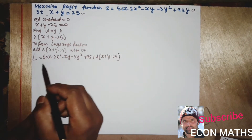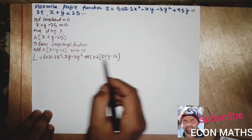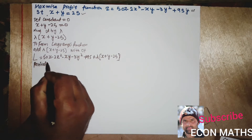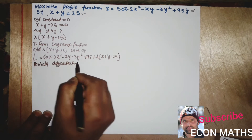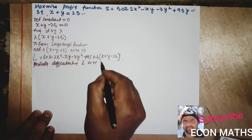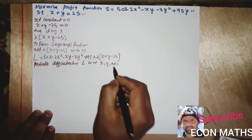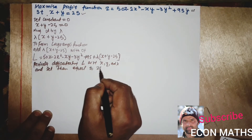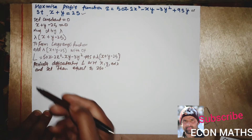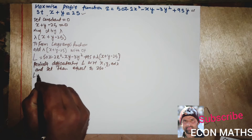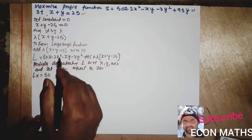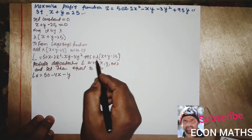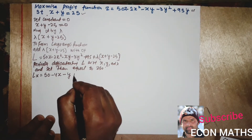To get the values of x, y, and lambda, we partially differentiate this Lagrangian function with respect to x, y, and lambda, and set them equal to 0. Differentiating L with respect to x gives: ∂L/∂x = 50 - 4x - y + lambda = 0.